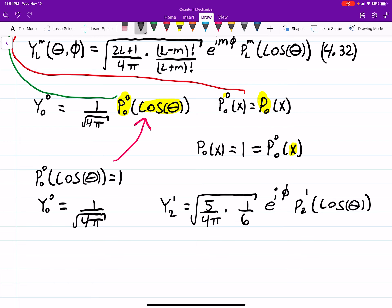Which can be simplified here. Just the square root of 5 over 24π, just simplifying inside the radical, e to the iϕ, P₂¹ of cosine theta. That's not too bad.